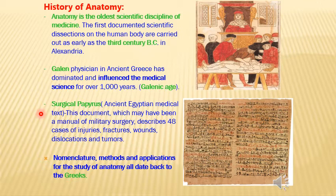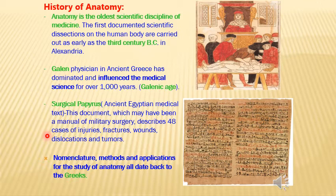The Surgical Papyrus described about 48 cases of injuries, fractures, wounds, dislocations, and tumors — work done on soldiers injured in war. After treating them, conclusions were drawn on how fractures should be reduced and wounds treated, and all those findings were recorded in the Surgical Papyrus. The nomenclature, methods, and applications for anatomy all date back to the Greek's time, mostly the third and fourth centuries, and the terminology was mostly in Greek.